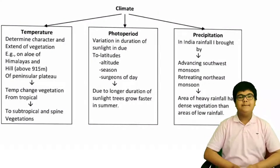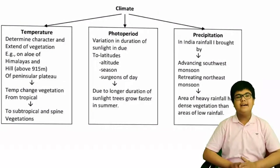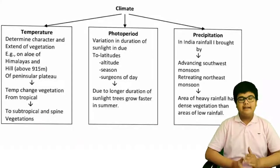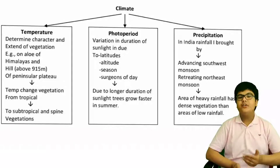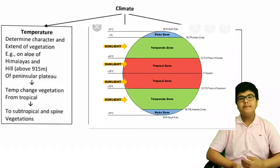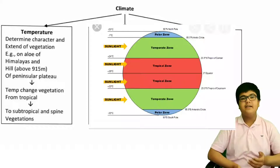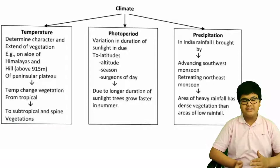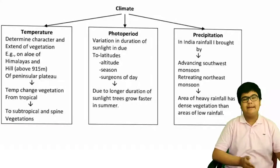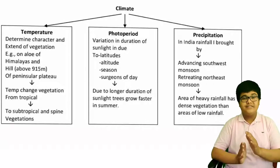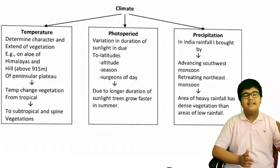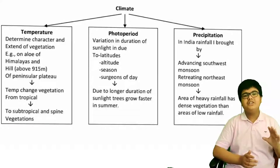The second factor is climate. Under climate, the main factors are temperature, photoperiod, and precipitation. Temperature determines the character and extent of vegetation. On the slopes of the Himalayas, very low temperatures cause vegetation to change from tropical to subtropical and alpine. In hotter regions, tropical plants are densely vegetated, but as altitude increases and temperature drops, vegetation cover decreases.